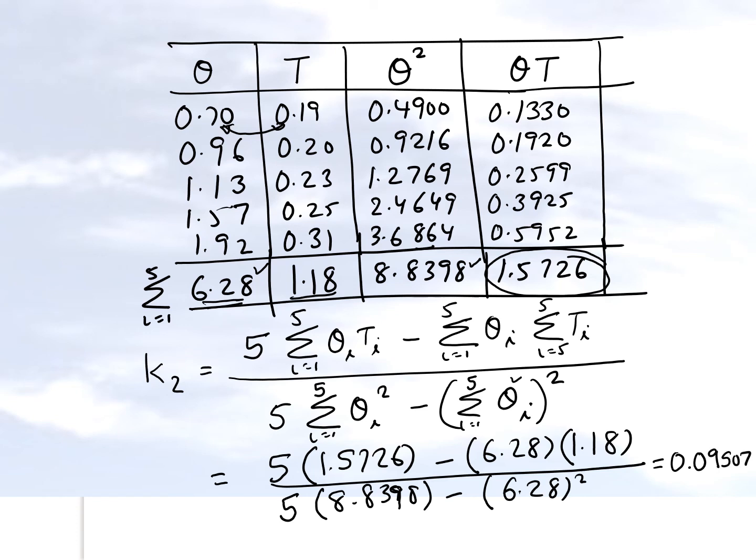Let's see what we get for the value of k1. So k1 is nothing but t bar minus k2 theta bar. So t bar will be the average value of all the t values minus k2 which we just found out.